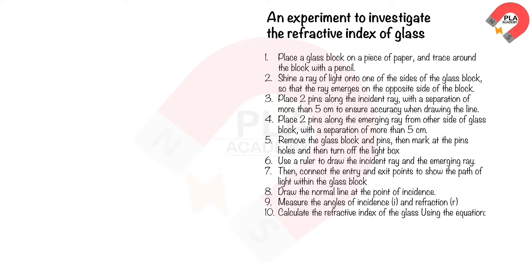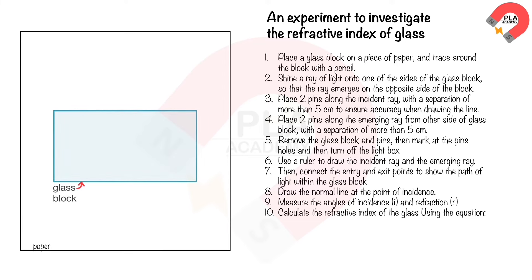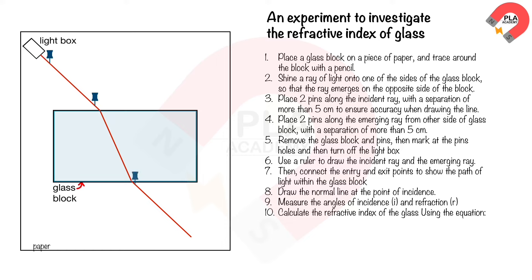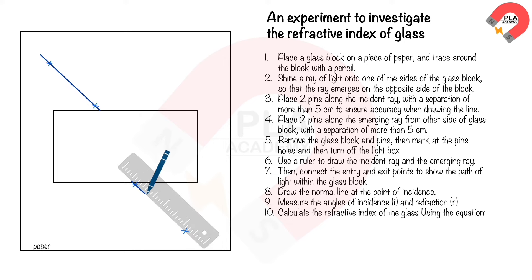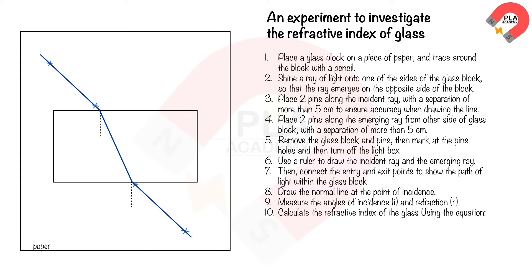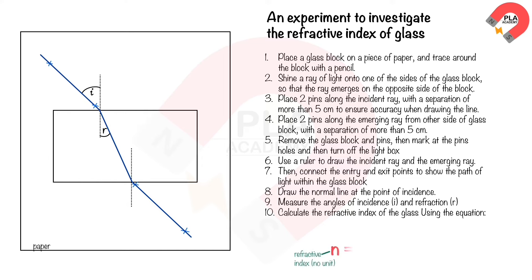An experiment to investigate the refractive index of glass: place a glass block on paper and trace around it. Shine a ray of light on the block and place two pins along the incident ray with a separation of more than 5 cm for accuracy. Place two more pins along the emerging ray on the other side. Remove the block and pins, draw the incident and emerging rays, connect entry and exit points to show the path inside the glass, draw the normal line, measure angles i and r, and calculate n = sin i / sin r.